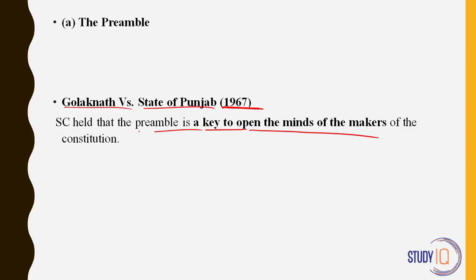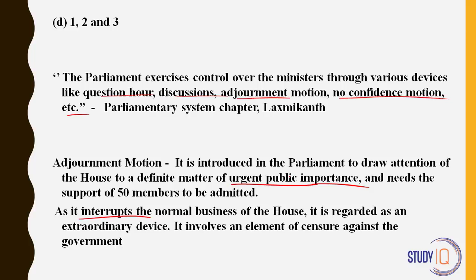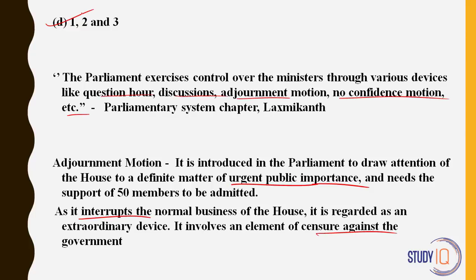Parliament of India exercises control over the functions of the Council of Ministers through adjournment motion, question hour, and supplementary questions — the answer is 1, 2, and 3. This question comes directly from Lakshmikant: 'Parliament exercises control over ministers through question hour, discussions, adjournment motion, no-confidence motion,' etc. The adjournment motion was initially intended for matters of urgent public importance, interrupting normal business. Nowadays it is brought quite frequently — anything happening in the country prompts an adjournment motion. It is used to censure the government. All three instruments allow parliament to regulate and exercise control over the Council of Ministers.